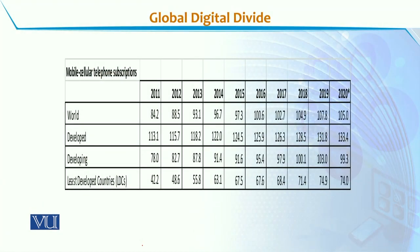If we look at Global Digital Divide statistics, we know that in 2020, considering 100% of the world population, in the developed world this figure is 133%, in the developing world it is 99%, and in the least developed countries it is 74%.